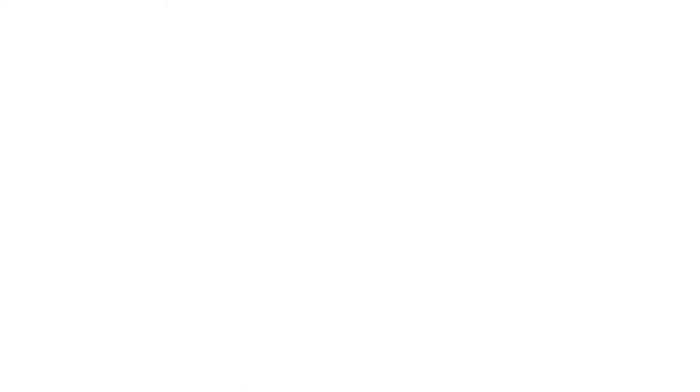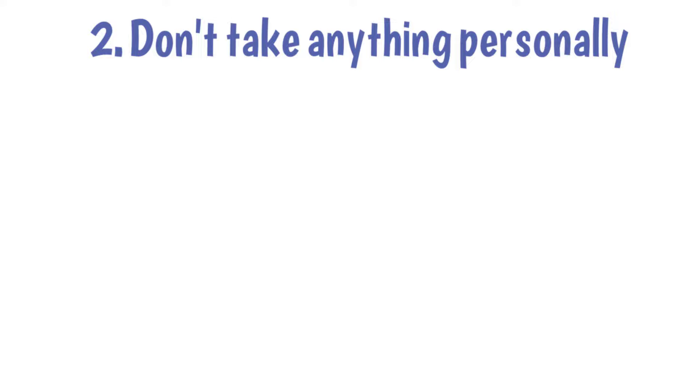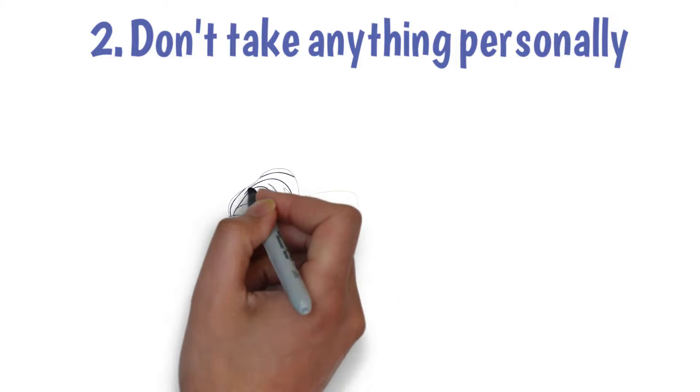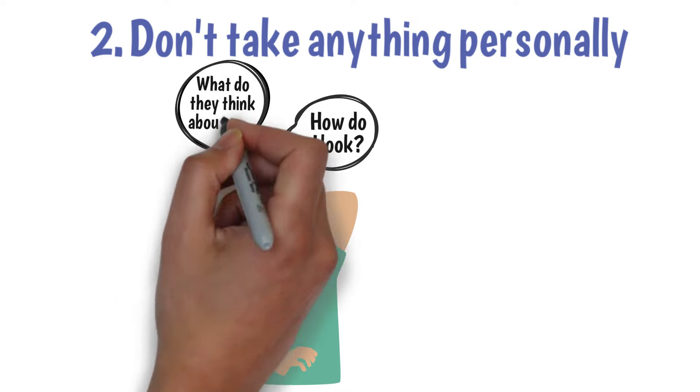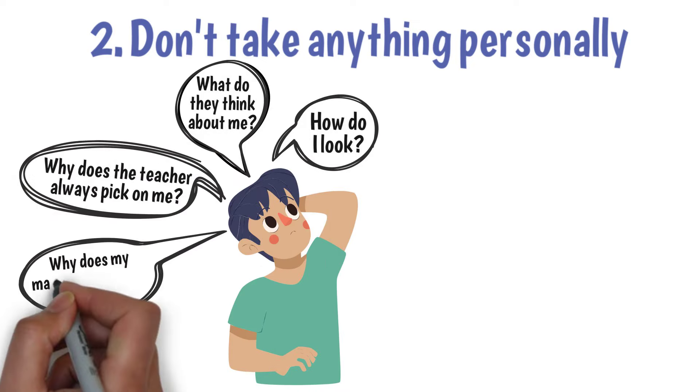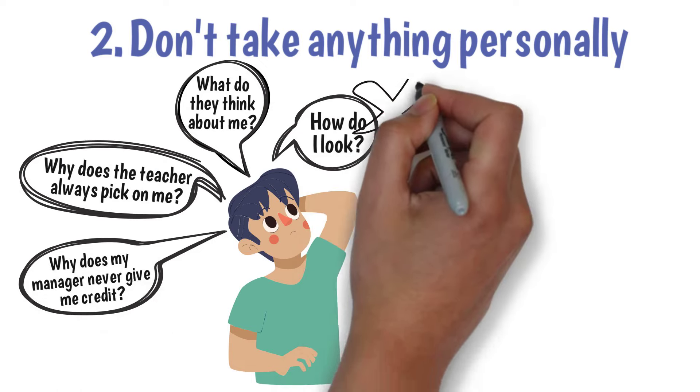The second agreement: Don't take anything personally. Being domesticated by society contributes to the trap of personal importance. Most people are focused on themselves most of the time. How do I look? What do they think about me? Why does the teacher always pick on me? Why does my manager never give me credit?